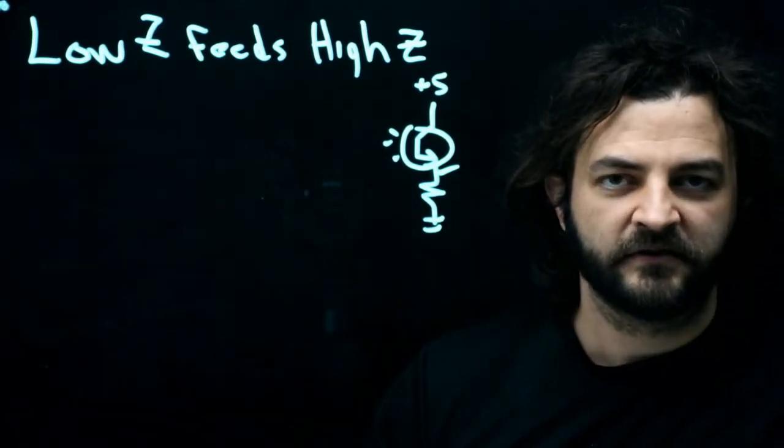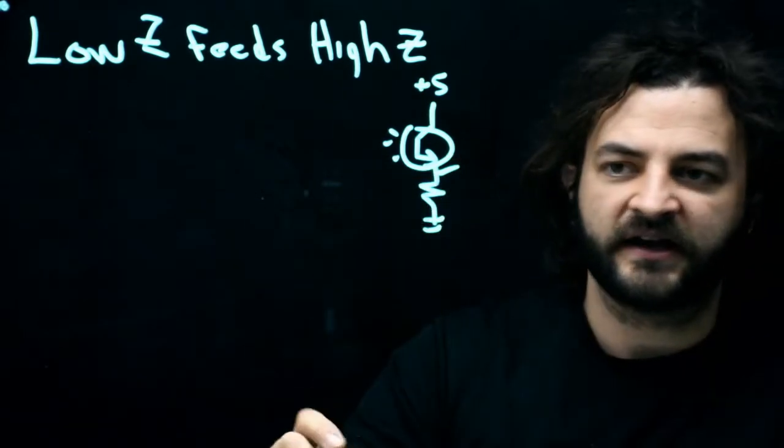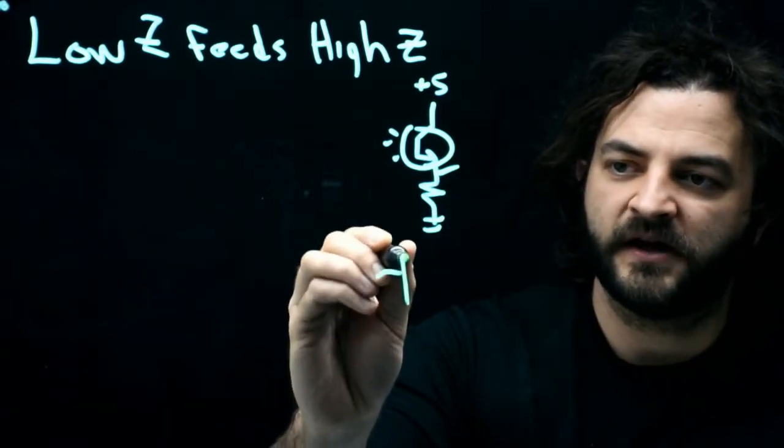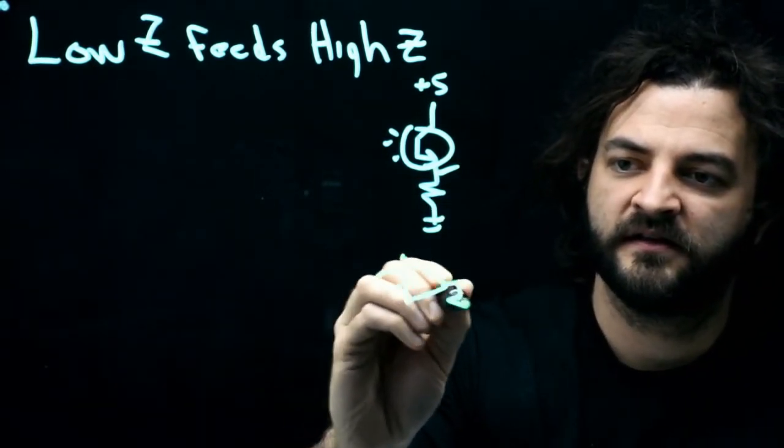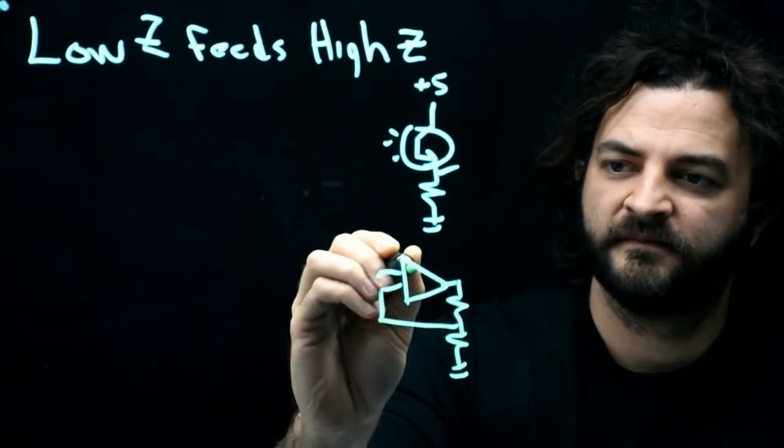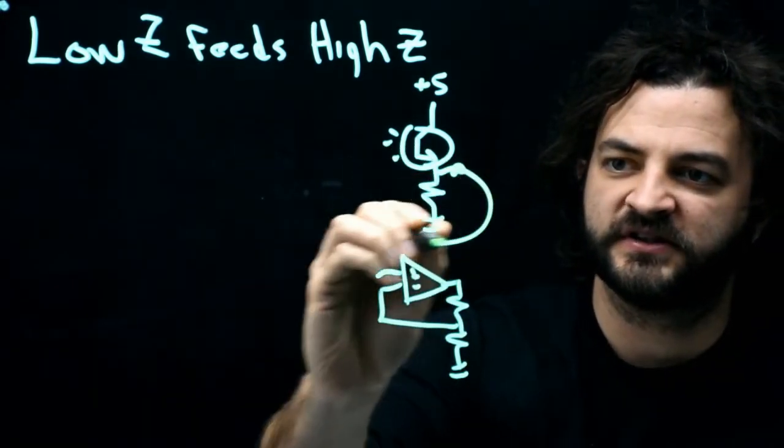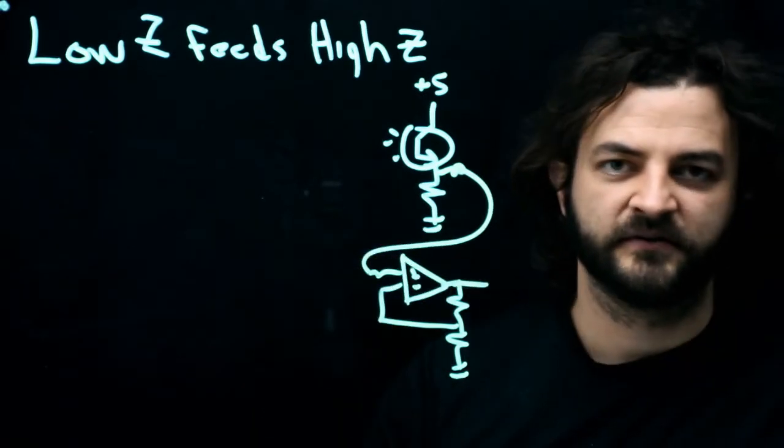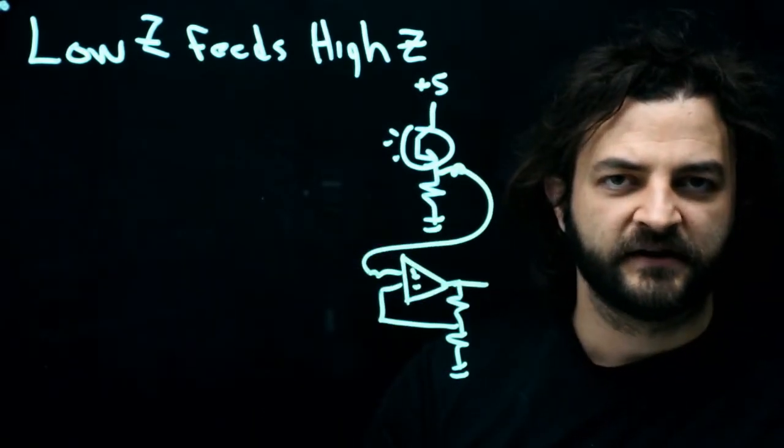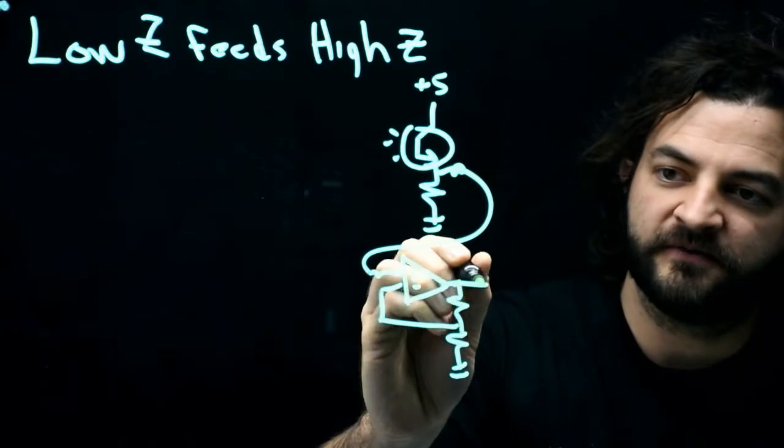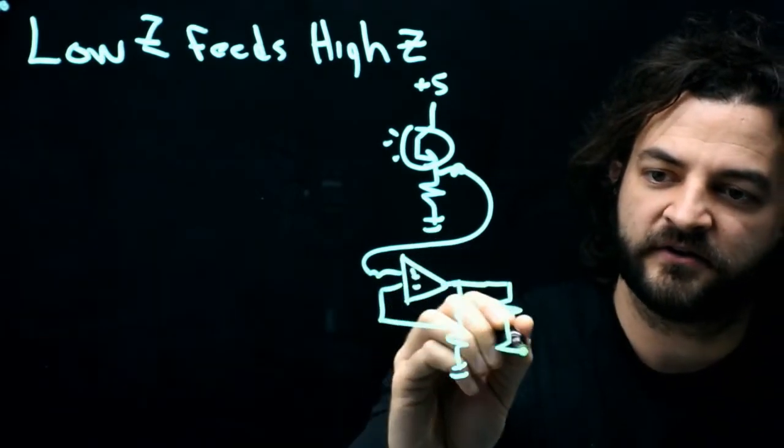The signal might not be very large, so I can take that signal and feed it into an amplifier block. I take this voltage and stick it over here, and now I have a bigger voltage. Maybe for some reason that voltage is too big and I want to make it smaller, so I would feed that into a voltage divider block.